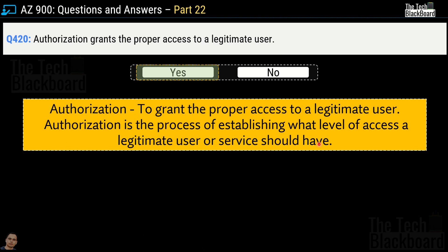To summarize: authentication is like logging into a website — it checks whether you are a legitimized user and lets you in. Authorization, on the other hand, determines what you can do once you're in — whether you are an admin, a normal user, or a guest. Authentication confirms identity; authorization determines the level of access.